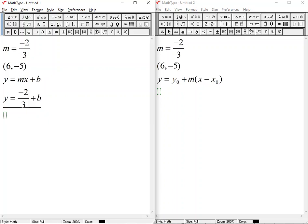So instead we're going to replace x with the x coordinate and we're going to replace y with the y coordinate and we're going to solve for b. That's going to give me negative 5 equals negative 2 thirds times 6, which is going to give me, since 3 goes into 6 twice, negative 4 plus b. And then I could add 4 to both sides. That would give me negative 1 for my b value.